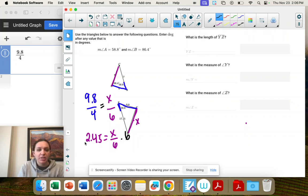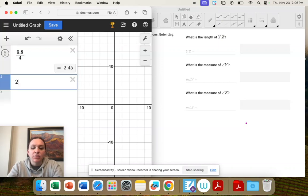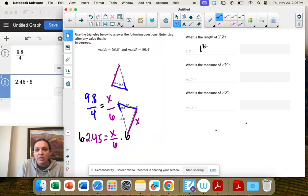And I'm doing that because x is on my numerator. So now to solve, I'm just going to multiply by 6. I don't have to cross multiply. So 2.45 times 6 is 14.7.